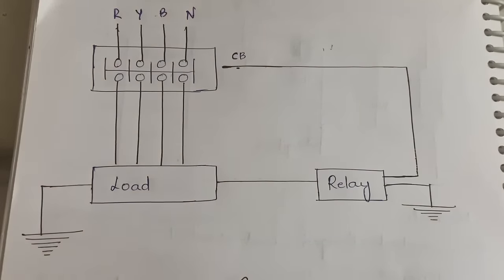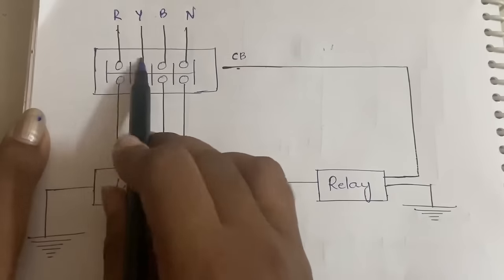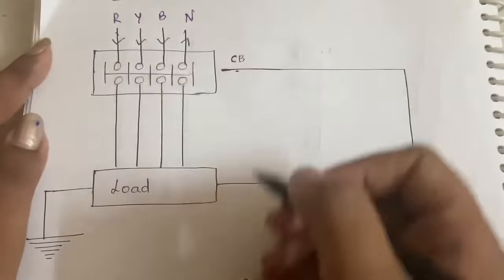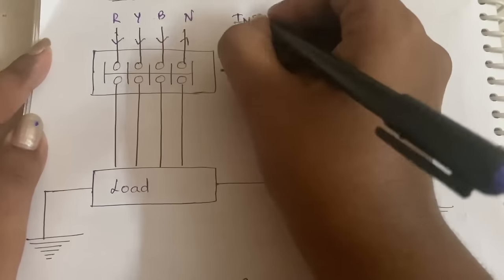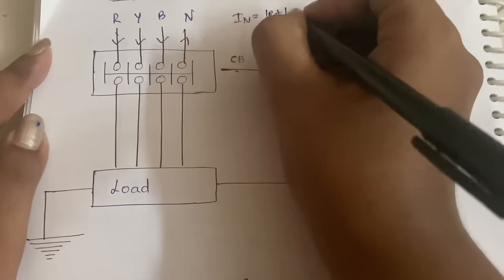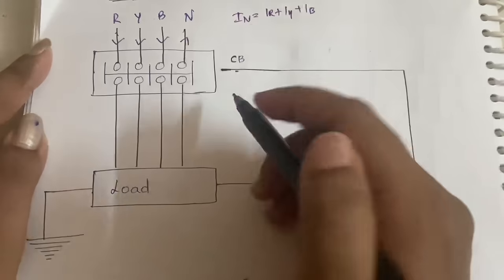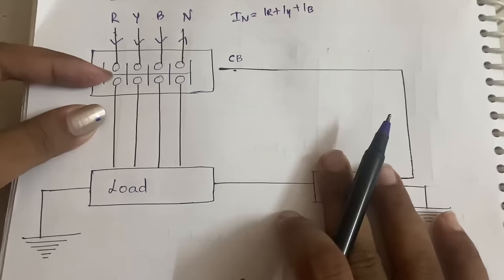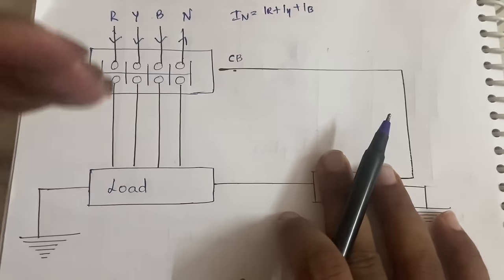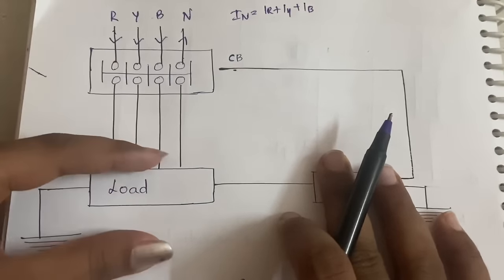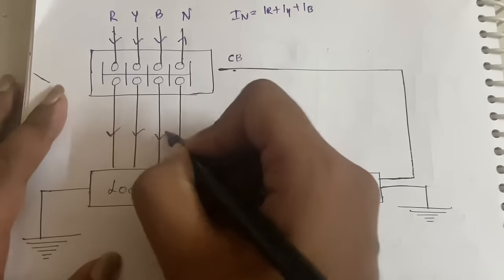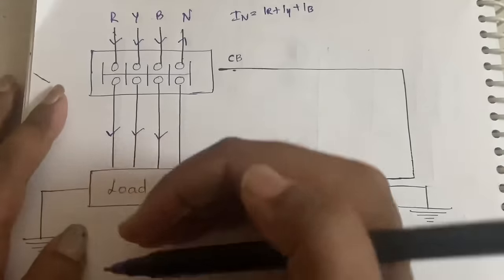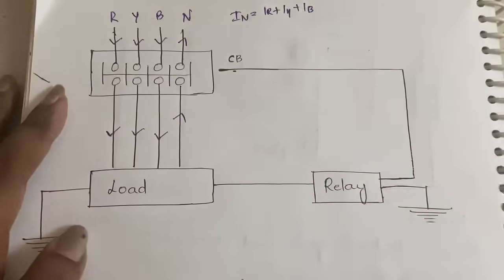In normal condition, whatever current you give through R, Y, B through these three phases, the same current has to go out from the neutral. That is, IN = IR + IY + IB. Suppose you are giving 10 amperes through R, Y, B — that 10 amperes comes in, the load uses it, and the same 10 amperes is sent back through neutral.